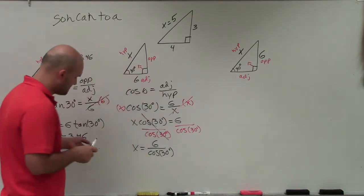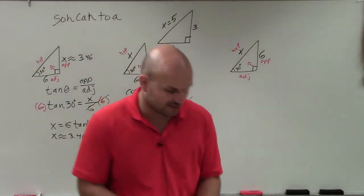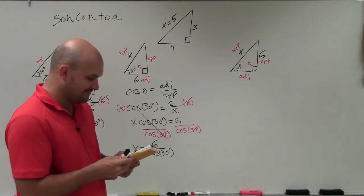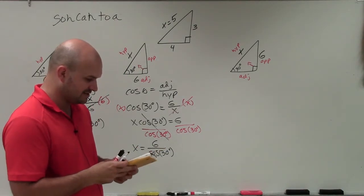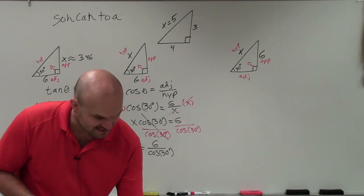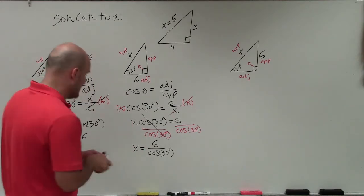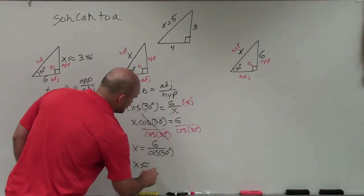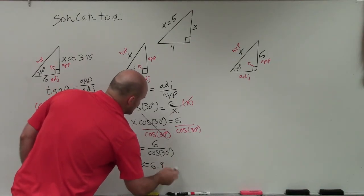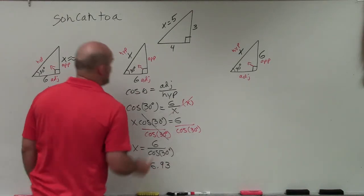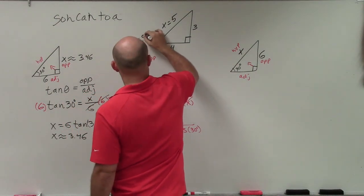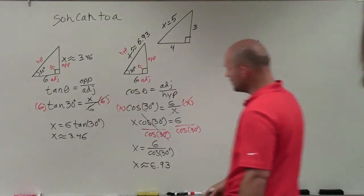Just like we did in the last problem, I want to make sure my calculator is in degree mode. I'm simply just going to type in 6 divided by the cosine of 30 degrees. In this example, I get 6.928. I'm going to approximate and round to the third, so I can say x is approximately 6.93.